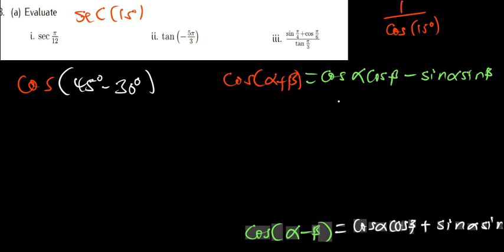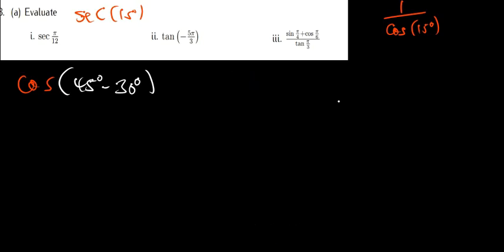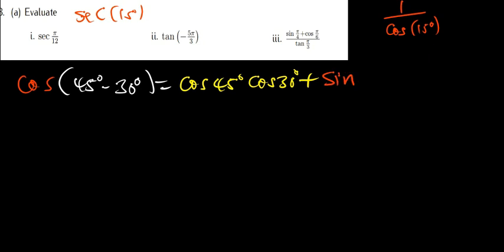So I'll apply the formula where alpha is 45° and beta is 30°. This gives: cos(45°) · cos(30°) — because there's a minus, we use plus — then plus sin(45°) · sin(30°).